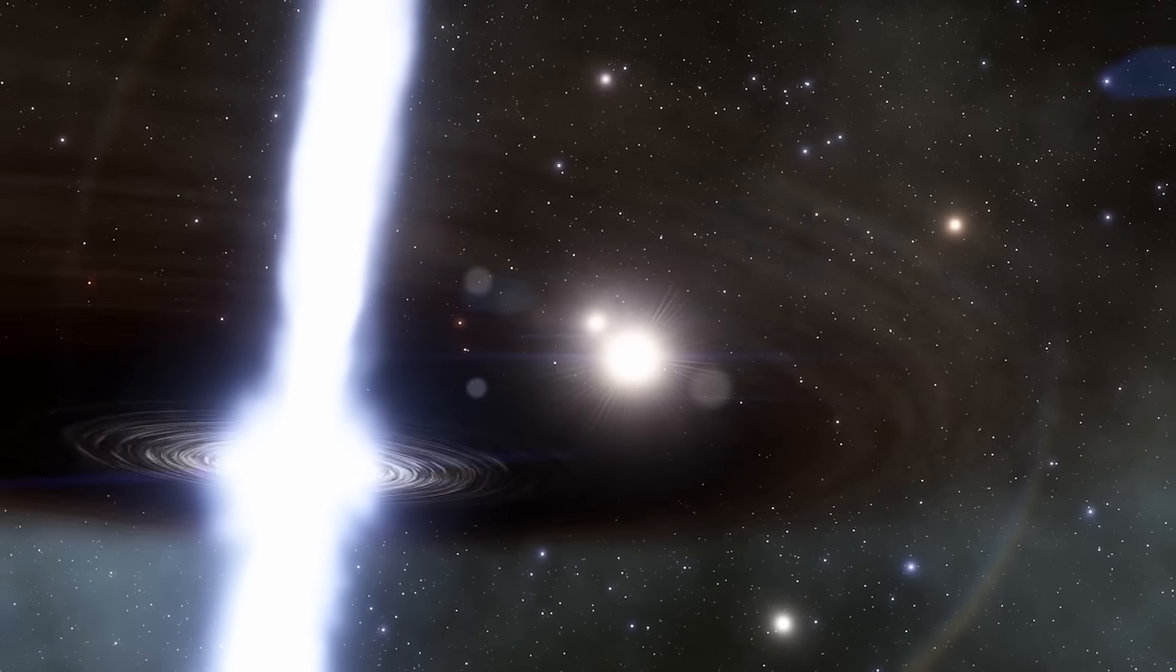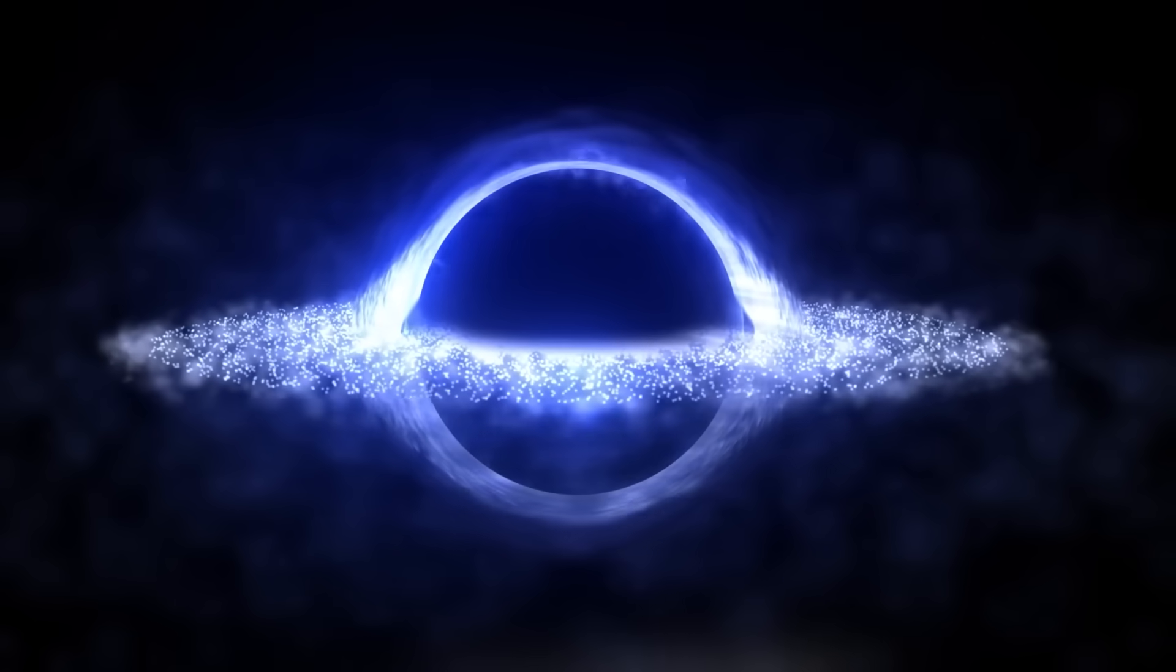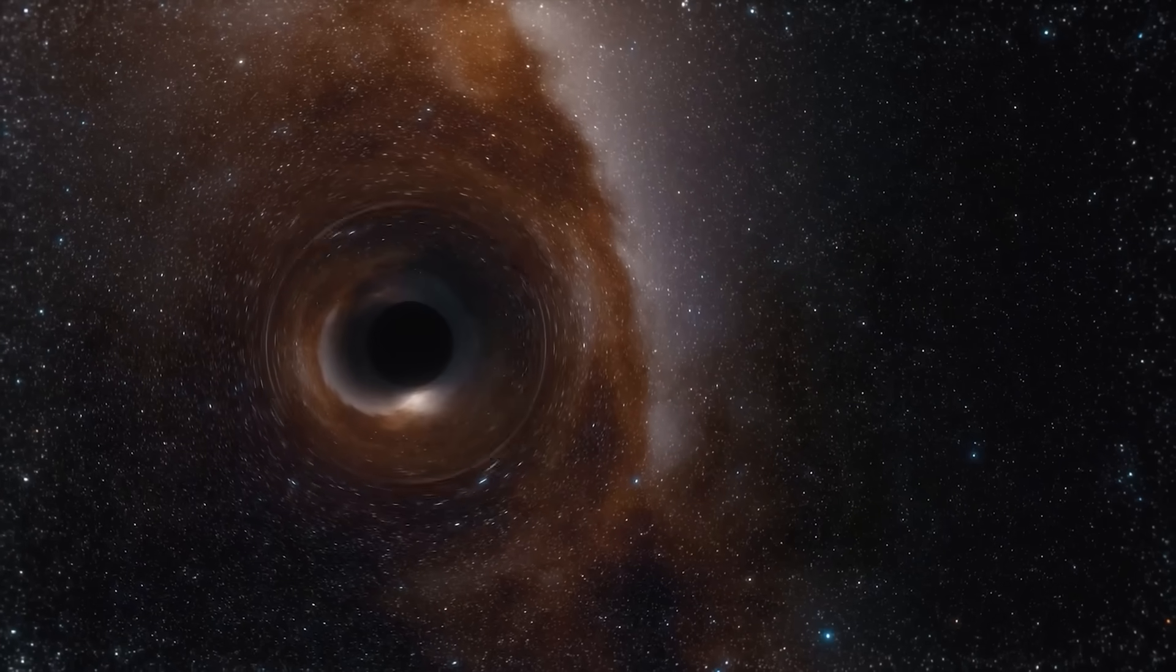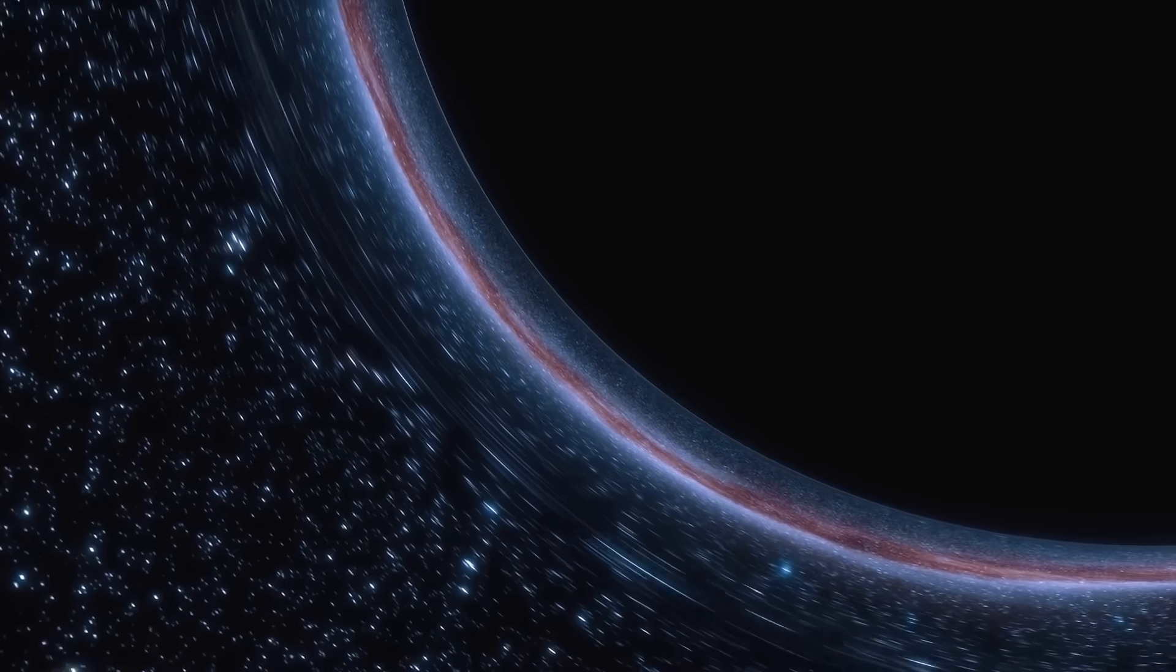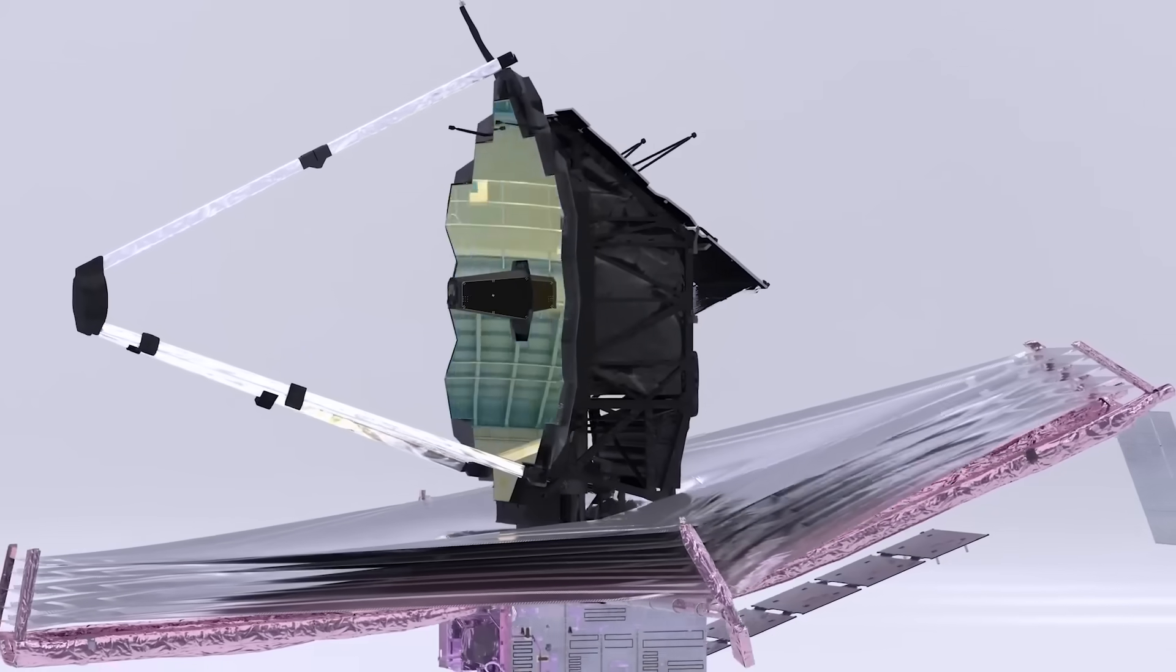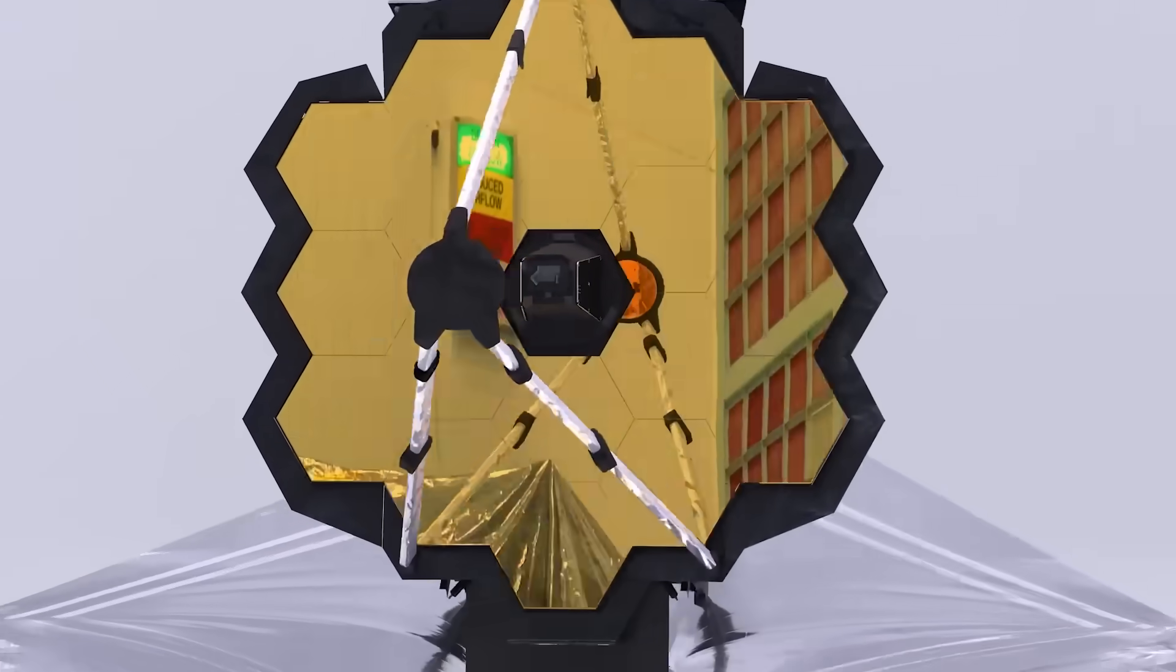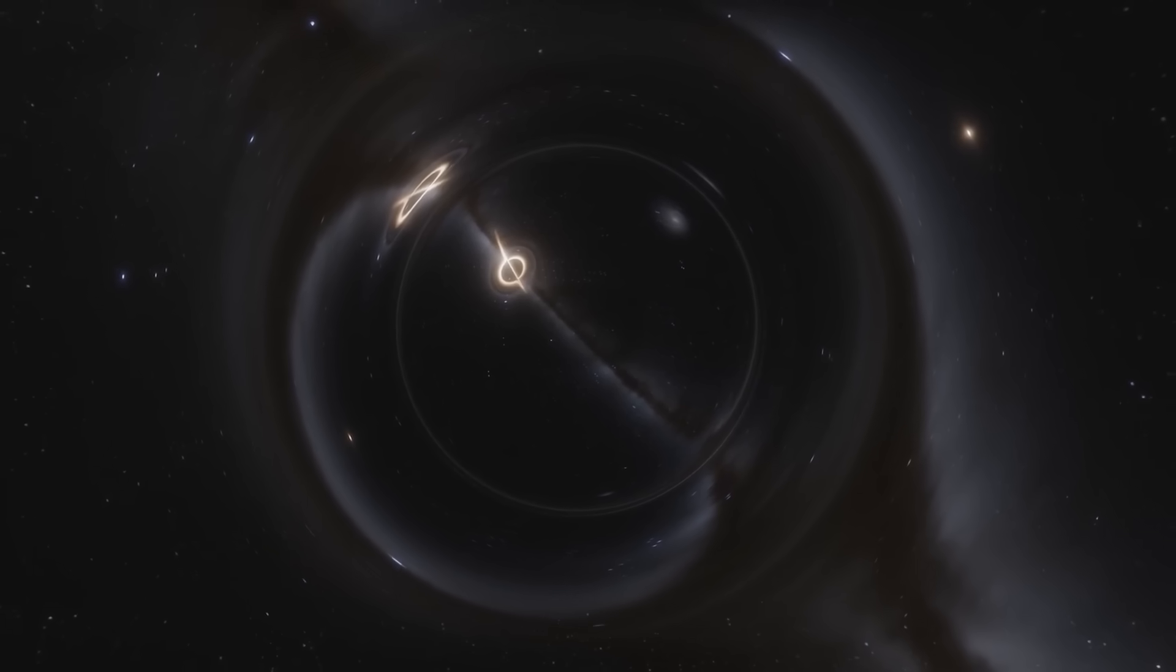Some researchers now believe Webb is detecting massive gravitational anomalies that don't correlate with any known source. These phantom mass fields act like cosmic fingerprints, pressing down on spacetime from a place we cannot see. But where are they coming from? Some theorists are beginning to suggest the unthinkable. We're seeing the shadow of another universe, colliding with our own.